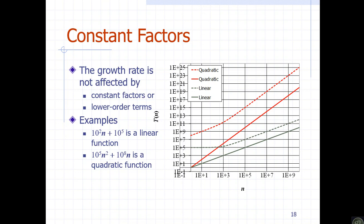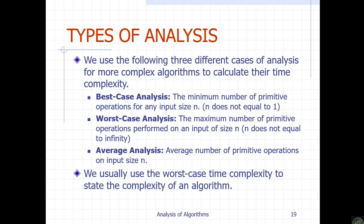For example, consider the function 10 to the power of 5 times n-squared plus 10 to the power of 8 times n. When n is large, the n-squared term dominates. The 10 to the power of 8 coefficient of n becomes insignificant compared to the n-squared term. So the growth rate is dominated by n-squared, and the lower-order terms and constant factors are dropped. In worst case analysis, this is always the approach.